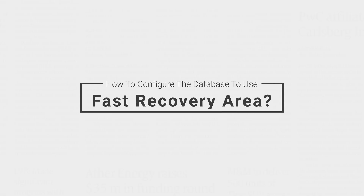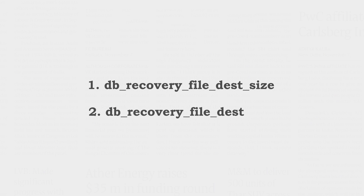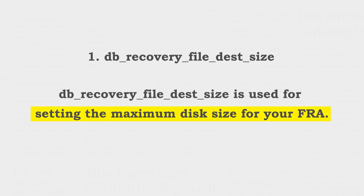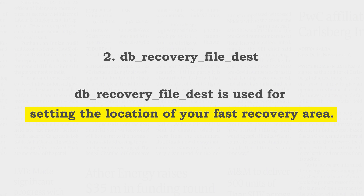Now that we have created our FRA directory, next we have to configure our database to use it for saving backup copies. To configure the FRA, we need to set two parameters: DB_RECOVERY_FILE_DEST_SIZE and DB_RECOVERY_FILE_DEST. The first parameter is used for setting the maximum disk size for your FRA — how much disk space your FRA can take on your hard drive. The second parameter is used for setting the location of your Fast Recovery Area. Whatever directory path you set in this parameter will be used by RMAN to save all the backups — this will become your FRA.